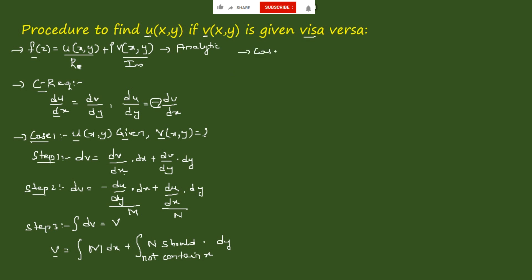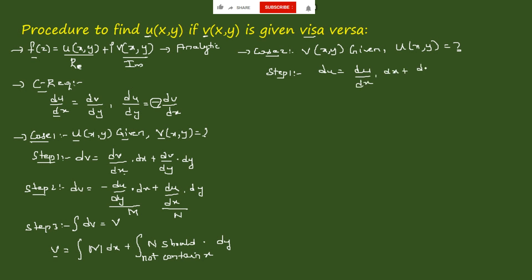Now Case 2: if the imaginary part v is given, how do we find the real part u? Step 1: differentiate u, giving du = (du/dx)dx + (du/dy)dy. Step 2: use the CR equation — replace du/dx with dv/dy and du/dy with −dv/dx. Since the v values are already given, we can directly differentiate them.